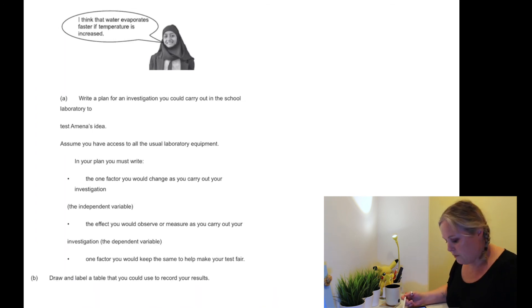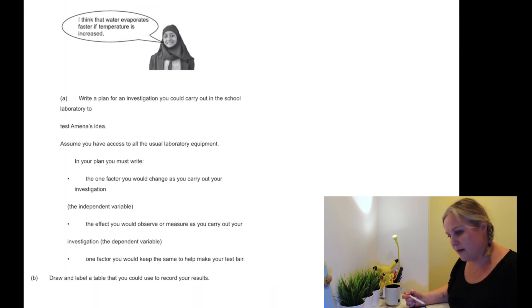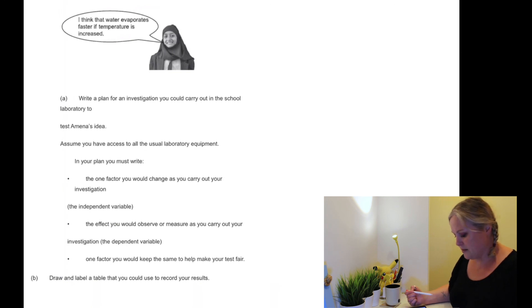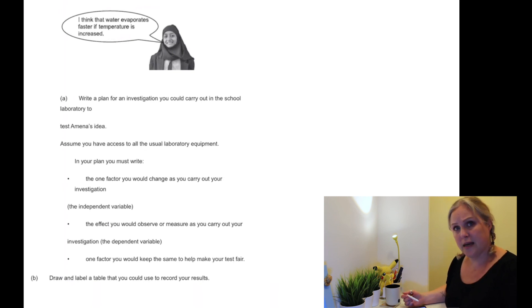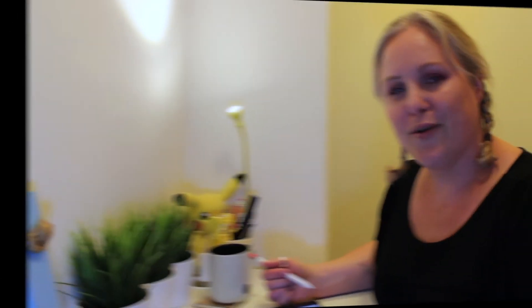There's one more question for you to have a go at, also on the worksheet. You need to write a plan for an investigation — you need to include your independent, dependent, and control variables. The investigation is: water evaporates faster if temperature is increased. Think about how you'd test that, what you'd measure, what you'd keep the same, and then draw a table to record your results in. I hope it's been helpful — give it a like if so, and have a look at the next video please.